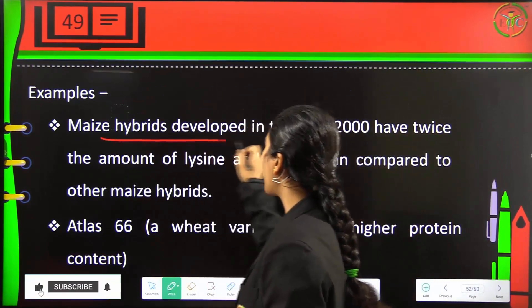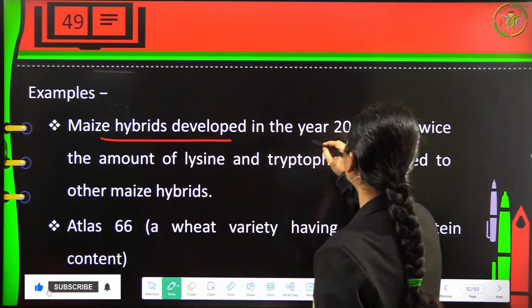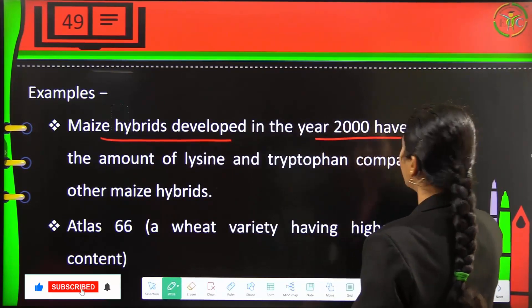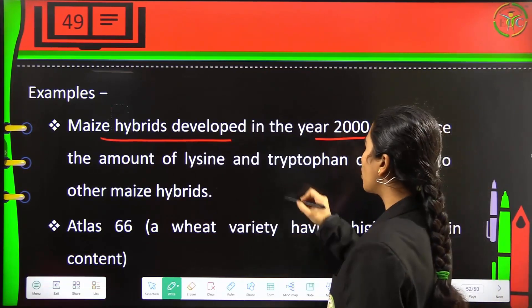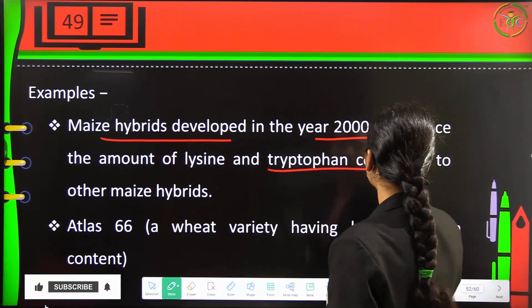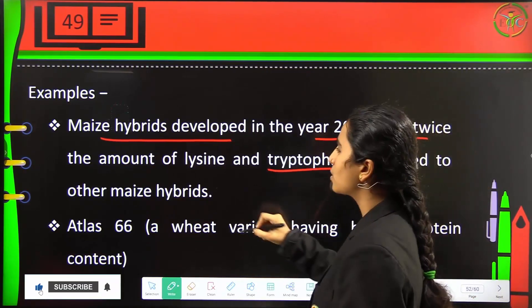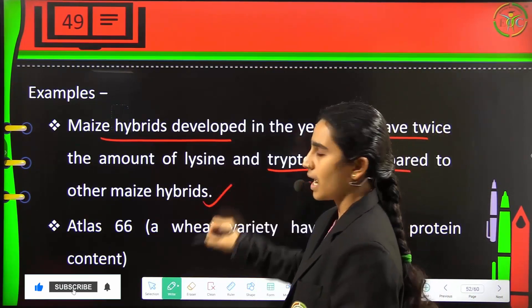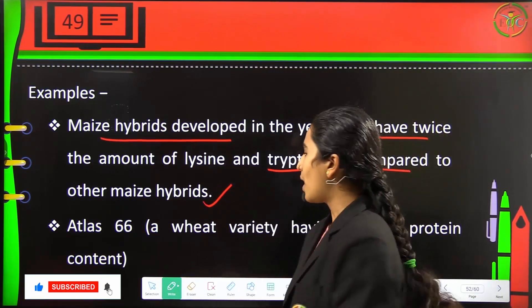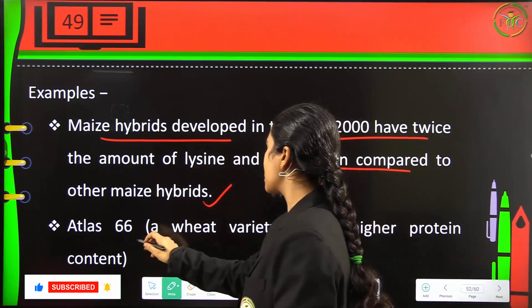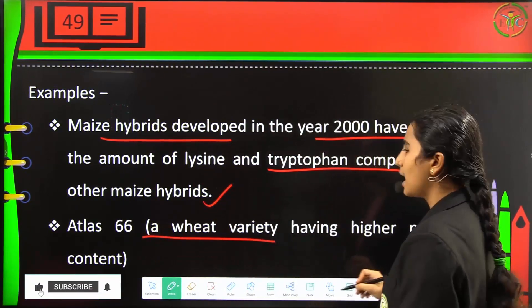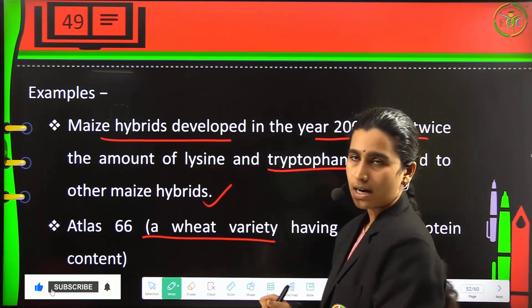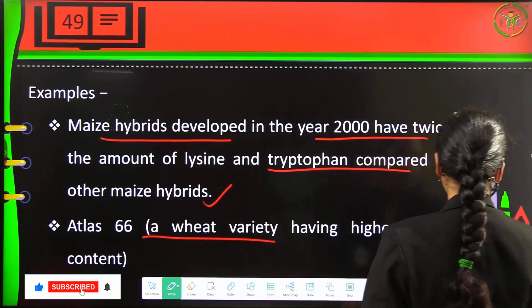An example of biofortification: maize hybrids developed in the year 2000 have twice the amount of lysine and tryptophan compared to other maize hybrids. Atlas 66, a wheat variety, has a higher protein content.